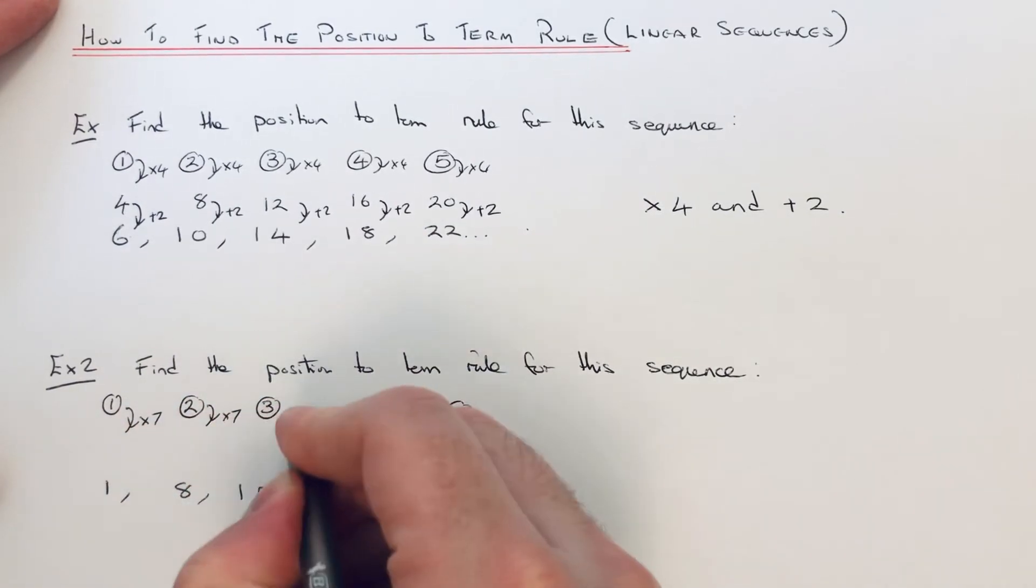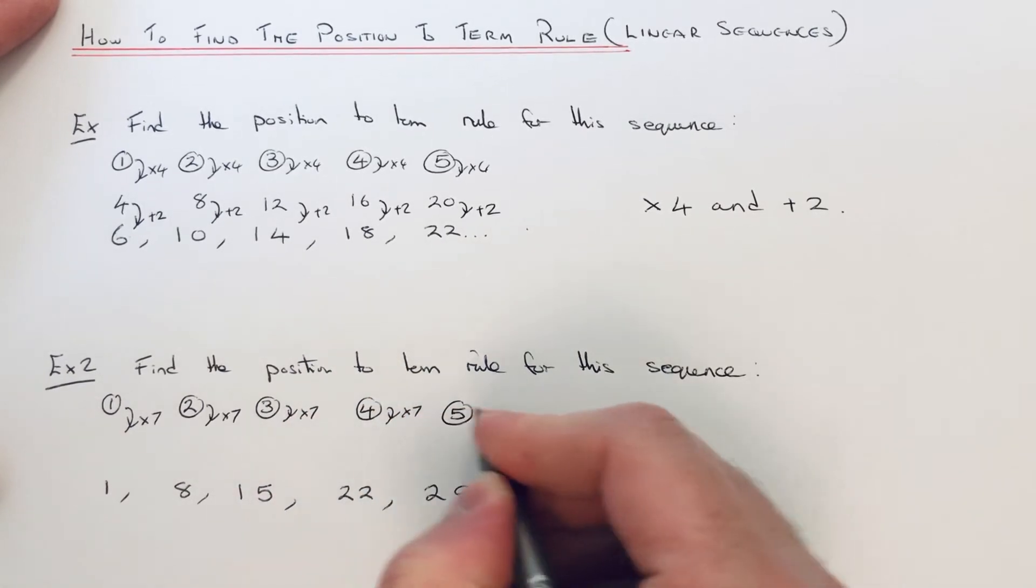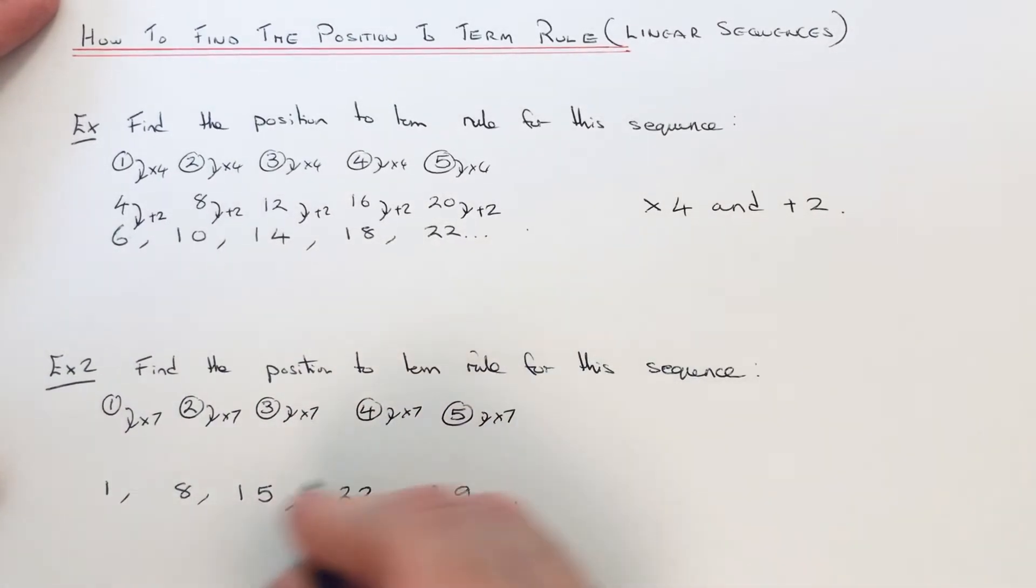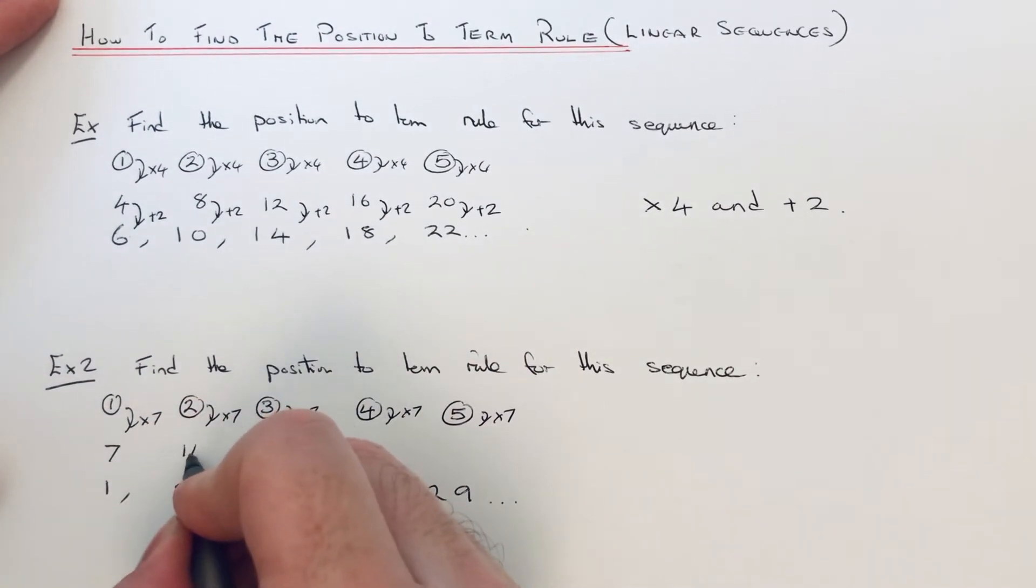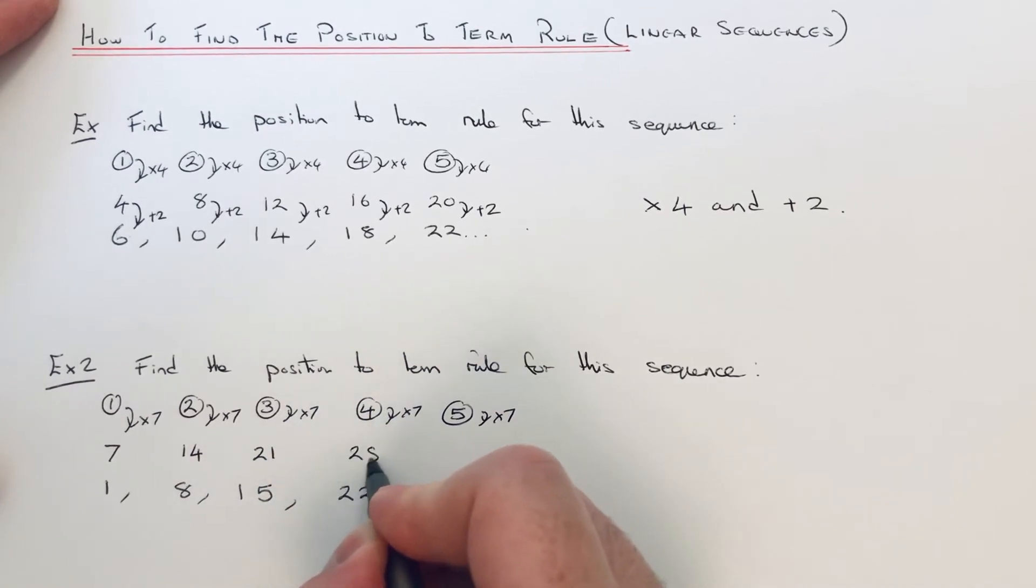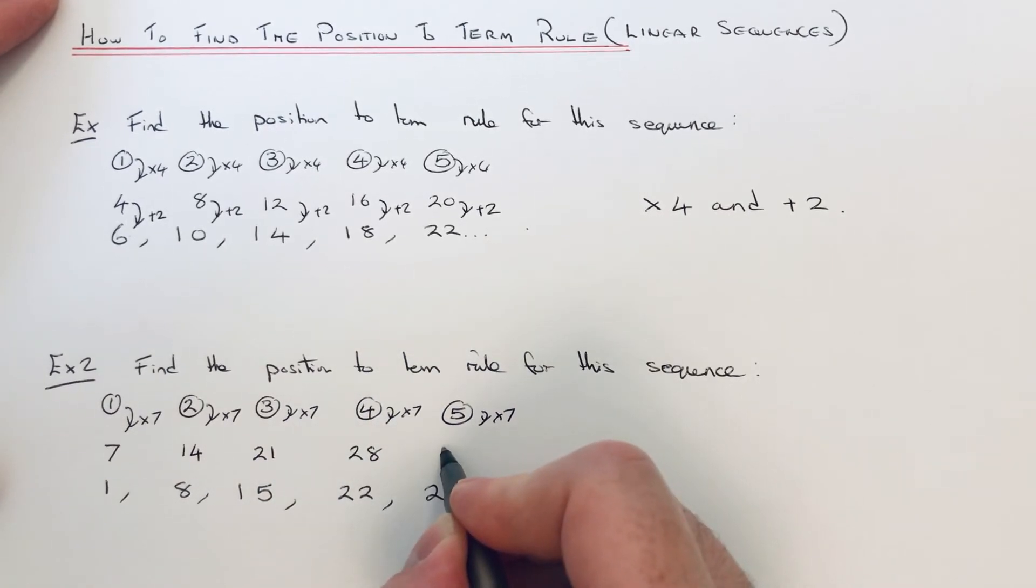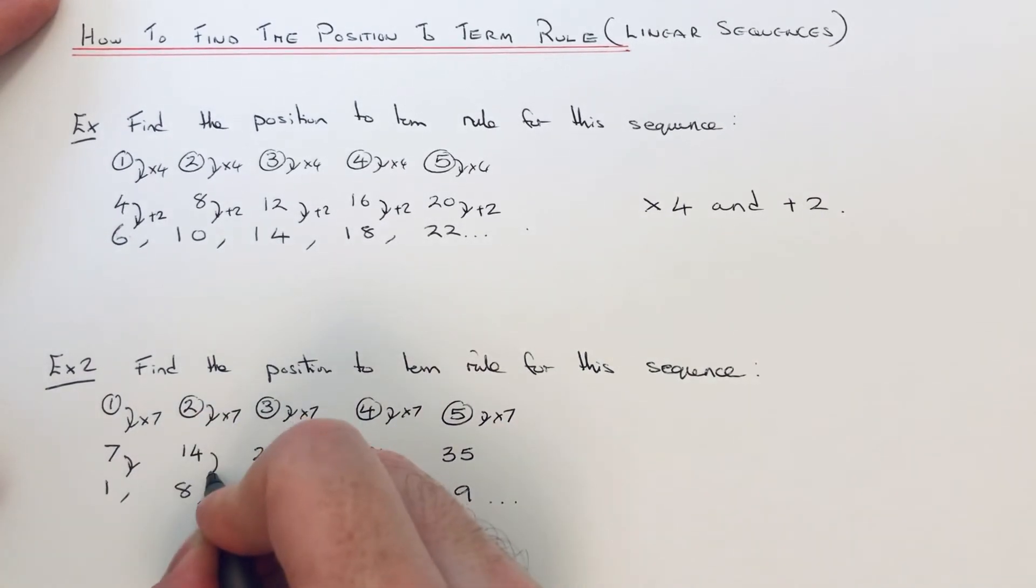1 times 7 is 7, 2 times 7 is 14, 3 times 7 is 21, 4 times 7 is 28, 5 times 7 is 35. Then what do we do to the 7 times table to get the sequence?